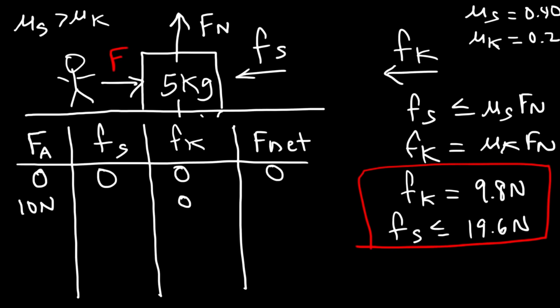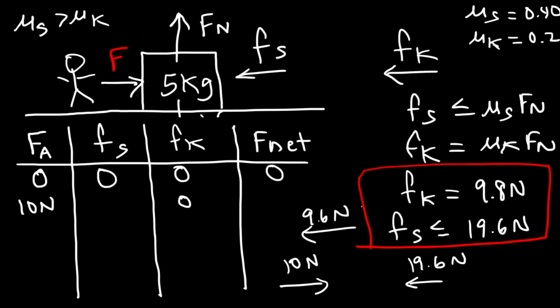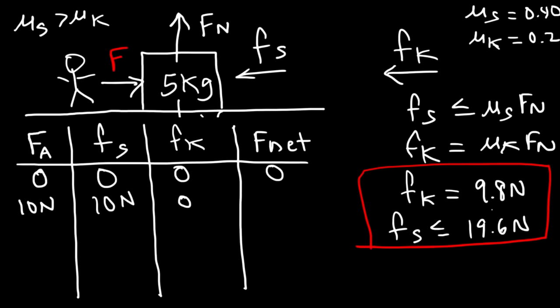If the box is not sliding against the carpet, static friction is present. If it is sliding, kinetic friction is present. If you're thinking of putting 19.6 for static friction when 10 N is applied, that's incorrect — it would create a net force of 9.6 N to the left, meaning the box pushes you back. That just doesn't happen. It turns out static friction matches the applied force until you exceed its maximum value. So if you push with 10 N, it pushes back with 10 N, and the net force is 0.